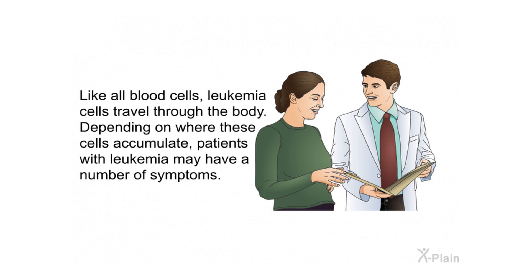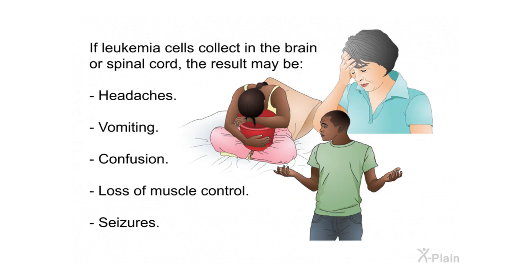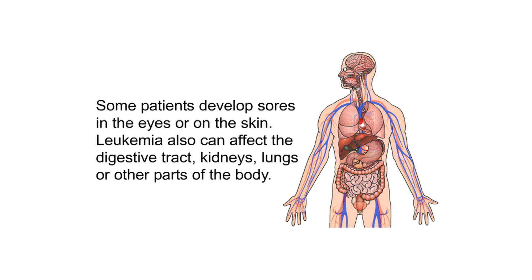Like all blood cells, leukemia cells travel through the body. Depending on where these cells accumulate, patients may have a number of symptoms. If leukemia cells collect in the brain or spinal cord, the result may be headaches, vomiting, confusion, loss of muscle control, or seizures. Some patients develop sores in the eyes or on the skin. Leukemia can also affect the digestive tract, kidneys, lungs, or other parts of the body.